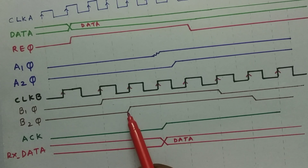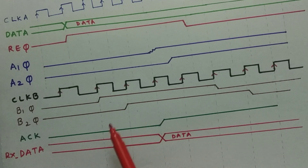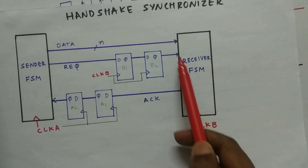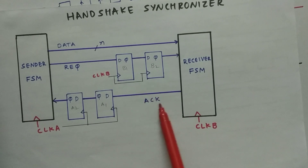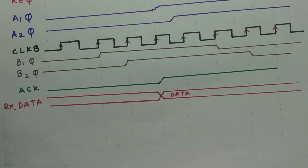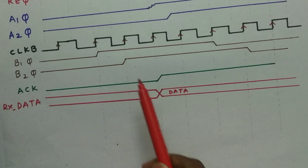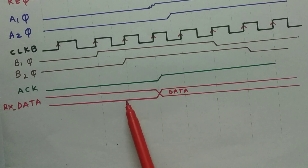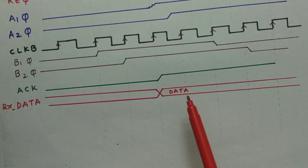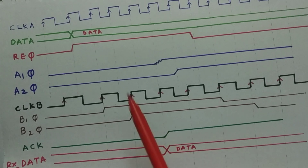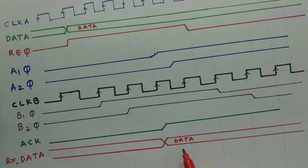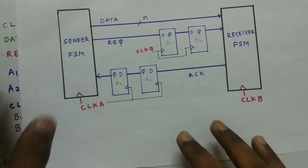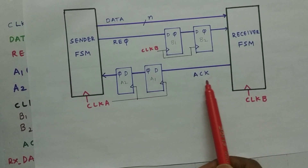When B2Q is received at the receiver end, an ACK signal is generated. The receiver takes in the data and sends the ACK signal back to the sender FSM. This is the Rx data that the receiver has received. When the ACK signal is sent back, we use a two-flop synchronizer again to pass it back to the sender's clock domain.